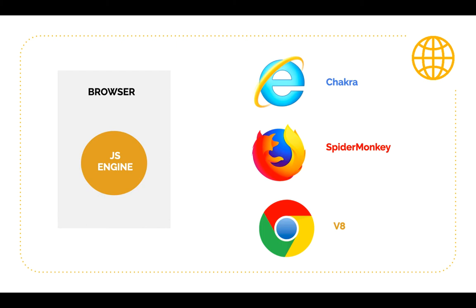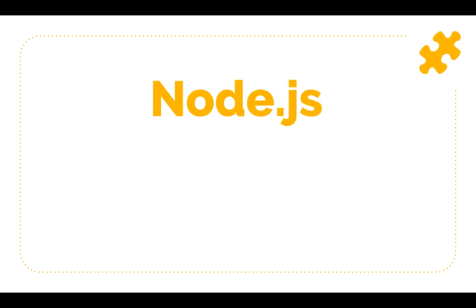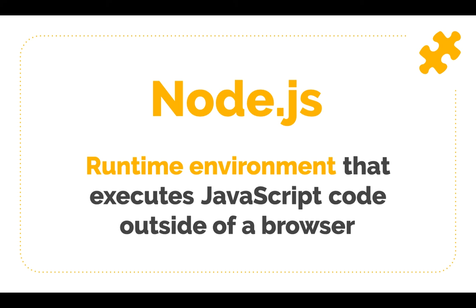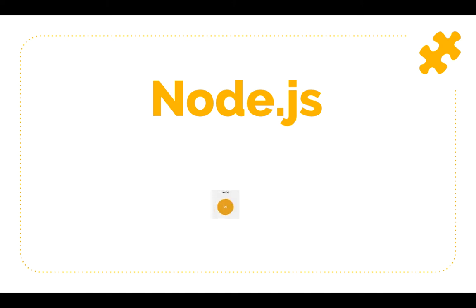Up until this point, you could only run JavaScript inside a browser because only browsers had JavaScript engines. Then came Node.js, also called Node. Node enables us to run JavaScript code on our machine instead of relying on a browser. Node is a JavaScript runtime environment that executes JavaScript code outside of a browser, and it is built on top of Chrome's open source V8 JavaScript engine.